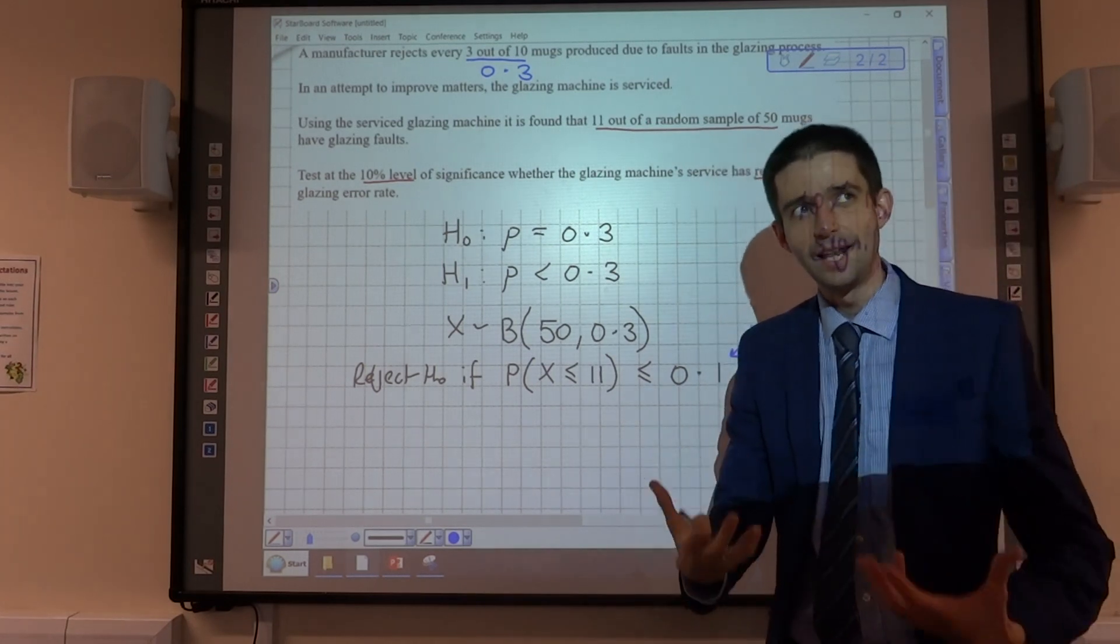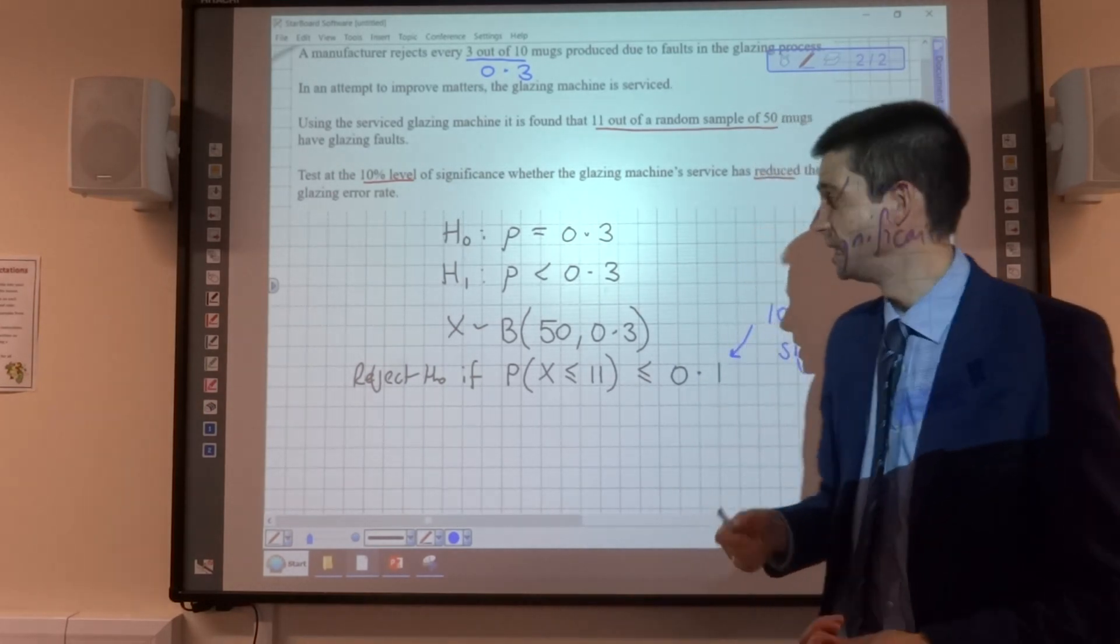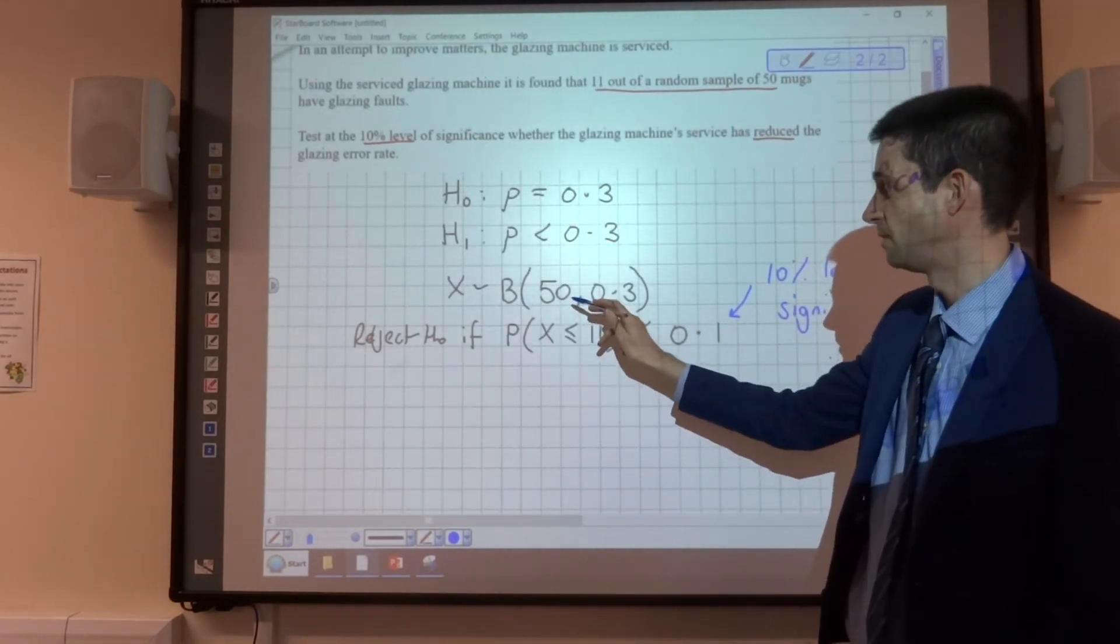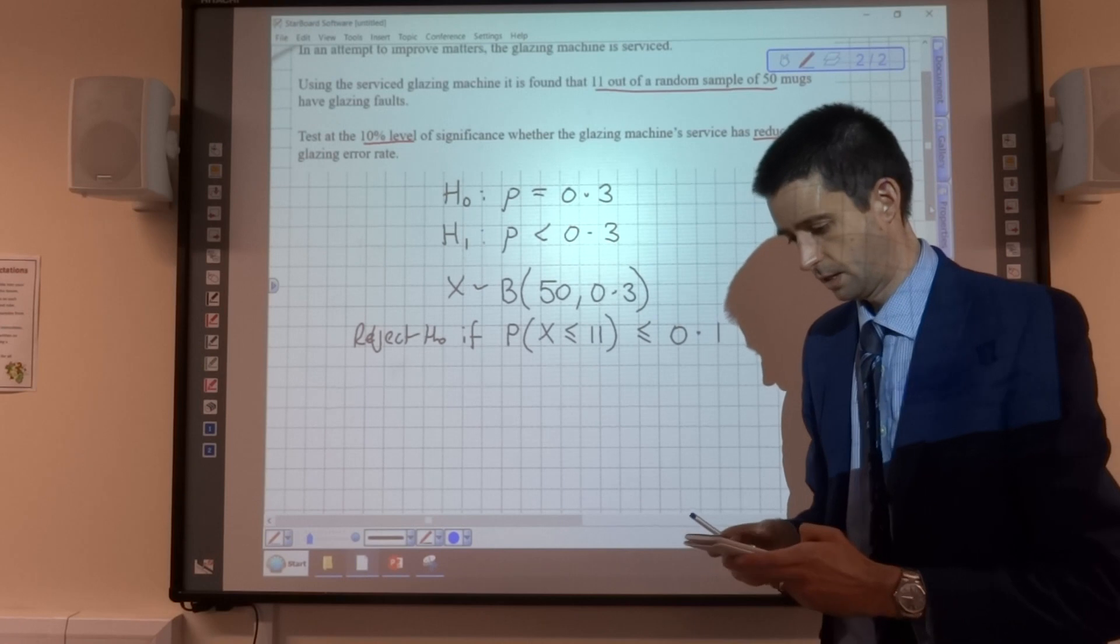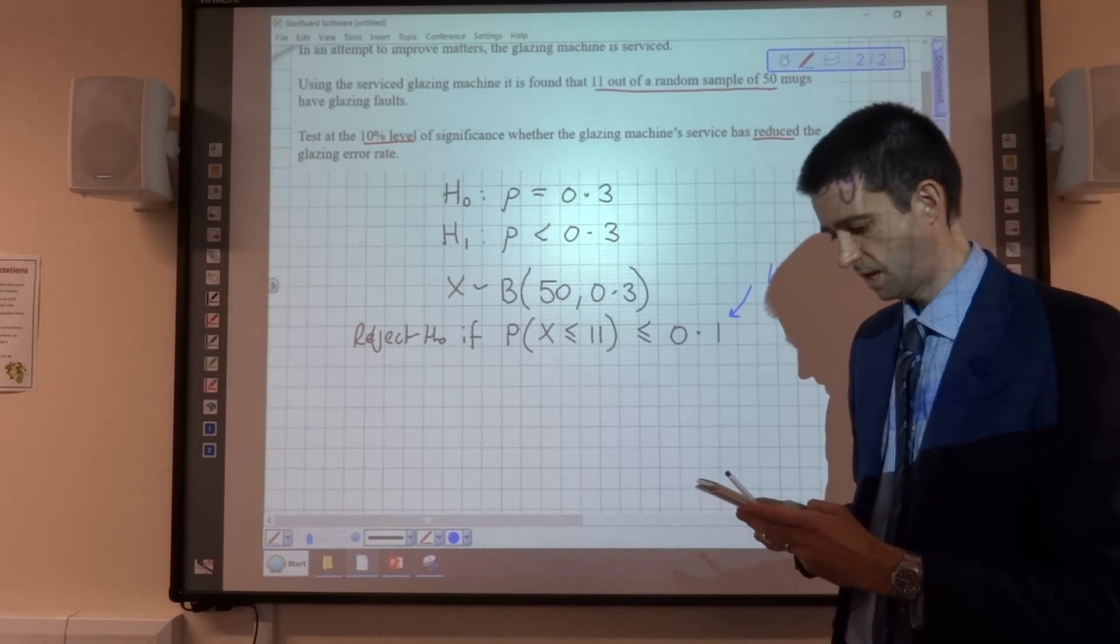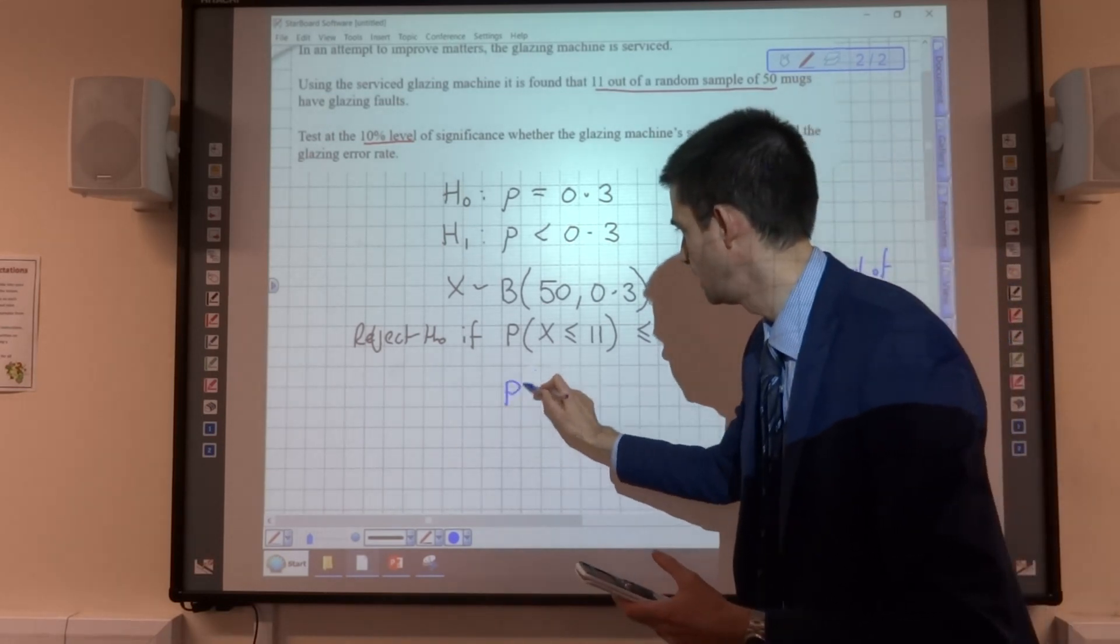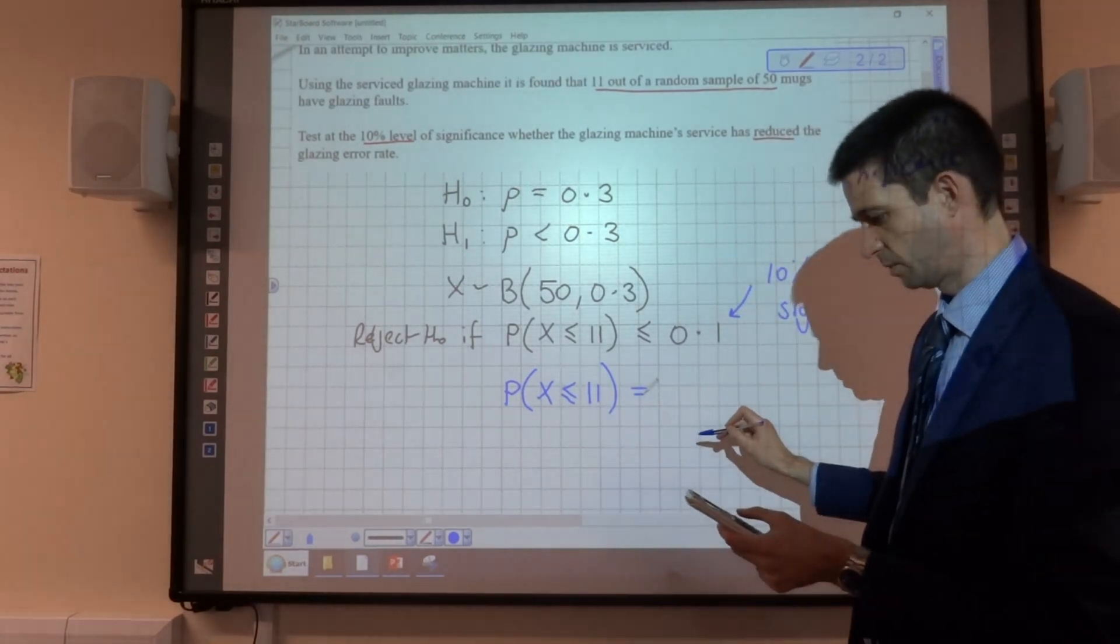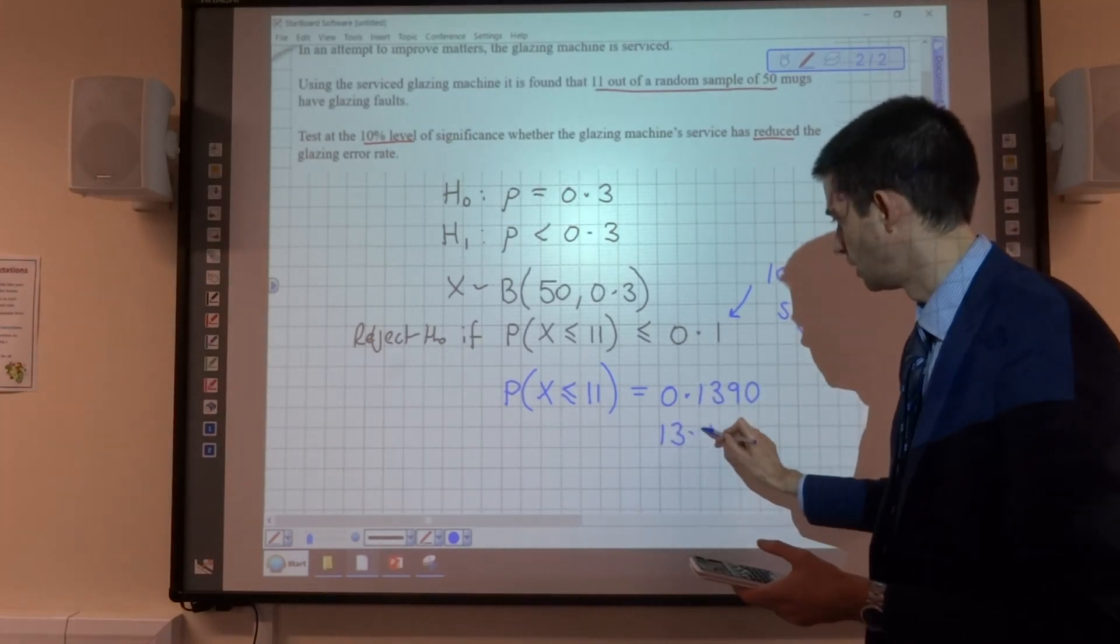So, we've done this sample, 11 faulty mugs out of 50, and we're saying, is the chance of that happening small enough that we doubt the 0.3? So, we're going to work it out using the binomial distribution where n is 50 and p is 0.3. I've got that up on my calculator. I'm going with 11, n is 50, p is 0.3. So, the probability that X is less than or equal to 11 comes out to four decimal places as 0.1390, or 13.9%.